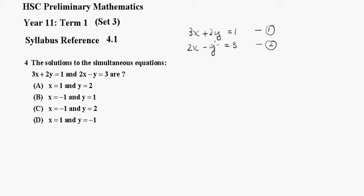Now, these y's have the same coefficients but different signs. I'll multiply equation 2 by 2 and get 4x - 2y = 6. Remember to multiply everything by 2. I'll call that equation 3.